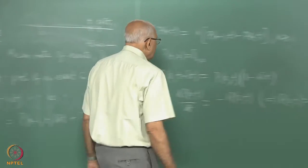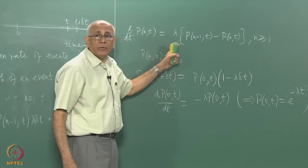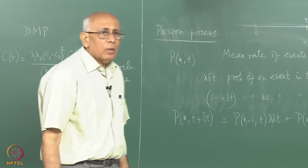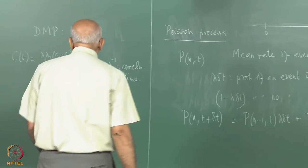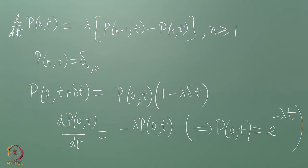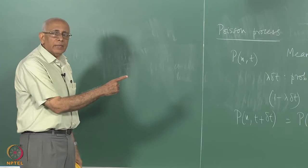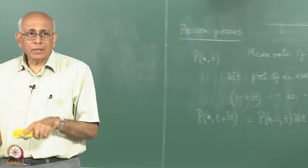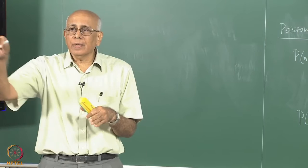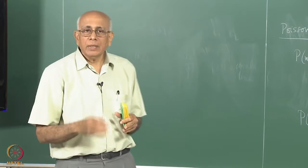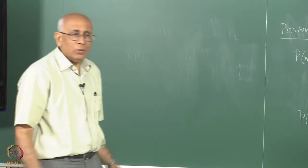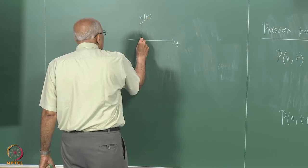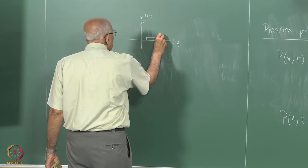The rest of the probabilities satisfy a set of coupled differential equations. The obvious approach is a generating function. The random variable here is n(t), which cannot decrease — it increases by 1 each time, remaining constant in between. So it looks like an irregular staircase. This is the simplest example of what's called a birth process, since n only increases with no death involved.